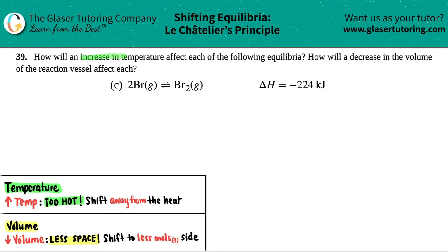Number 39, how will an increase in the temperature affect each of the following equilibria, and then how will a decrease in the volume of the reaction vessel affect each? Okay, and then we have letter C out of the bunch.